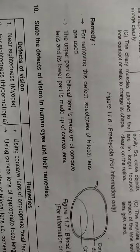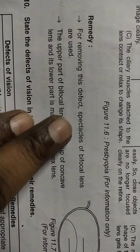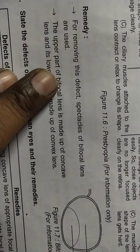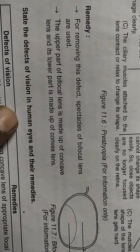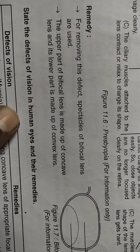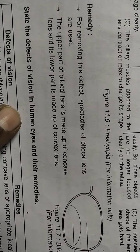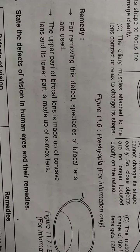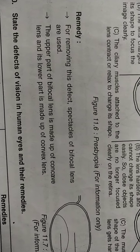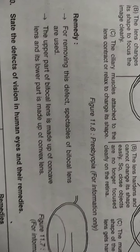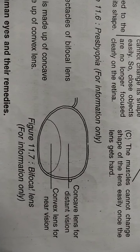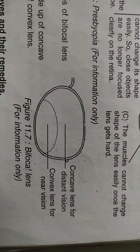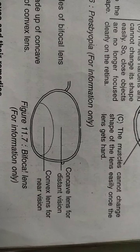The remedy — how can we remove this defect? For removing this defect, spectacles of bifocal lens are used. Bifocal lens means the lens which has both concave and convex types in one spectacle. Some portion is concave and some portion is convex. The upper side is a concave lens for distant vision, and the lower side is a convex lens for near vision.